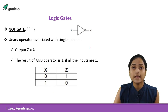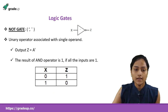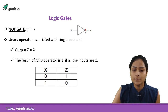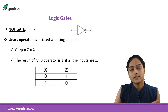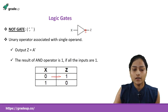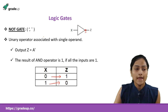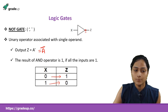The NOT gate takes an input and simply complements it — 0 is converted to 1 and 1 is converted to 0. It is represented by a comma or bar. The NOT gate symbol is a buffer with a small circle representing the complement.